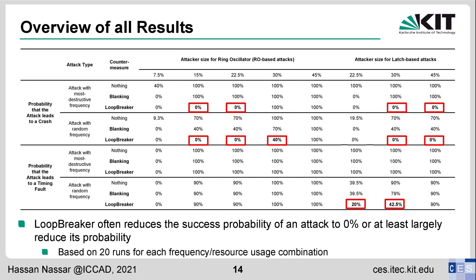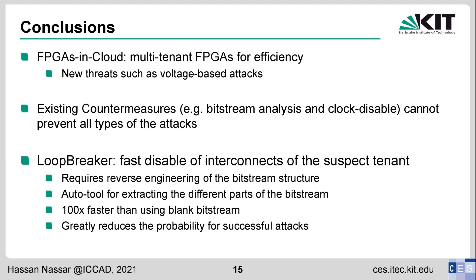Finally, to conclude: when FPGAs are used in the cloud, multi-tenancy opens the possibility for voltage-based attacks. Existing countermeasures cannot prevent all attack types, which is why Loop Breaker is needed. It disables the interconnects of the suspect partition to prevent attacks, and is provided as an open-source tool. Our solution is 100 times faster than the blanking alternative and greatly reduces the probability of a successful attack. Thank you very much for watching our video.